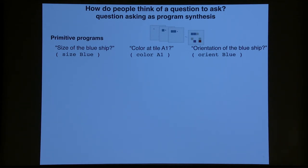We start with some primitive programs, which in this case, they're written in Lisp notation. So if you're unfamiliar, everything's in brackets, and the first token is the name of the function, and then the additional tokens are the arguments of that function. And these primitives come basically straight from the rules of the game as we describe it to participants. Every ship has a size, and every ship has an orientation, so you have a simple program that returns the size and the orientation of a particular ship, or the color at a particular tile.